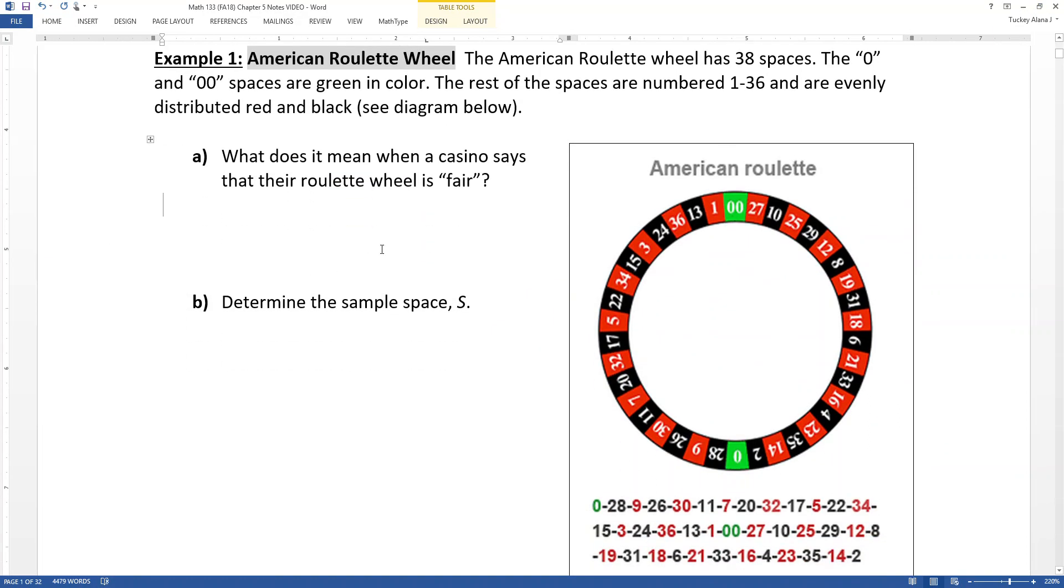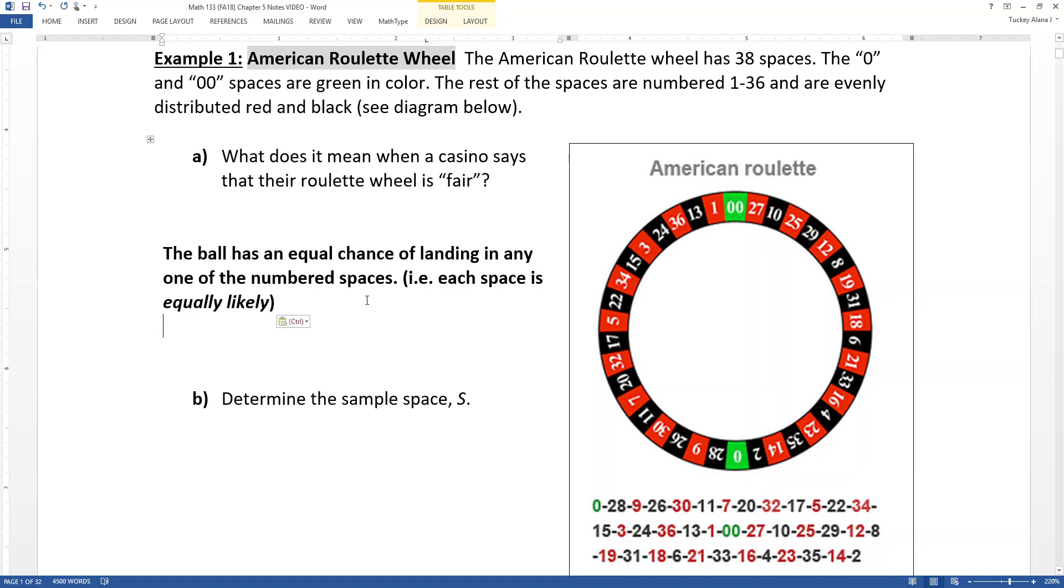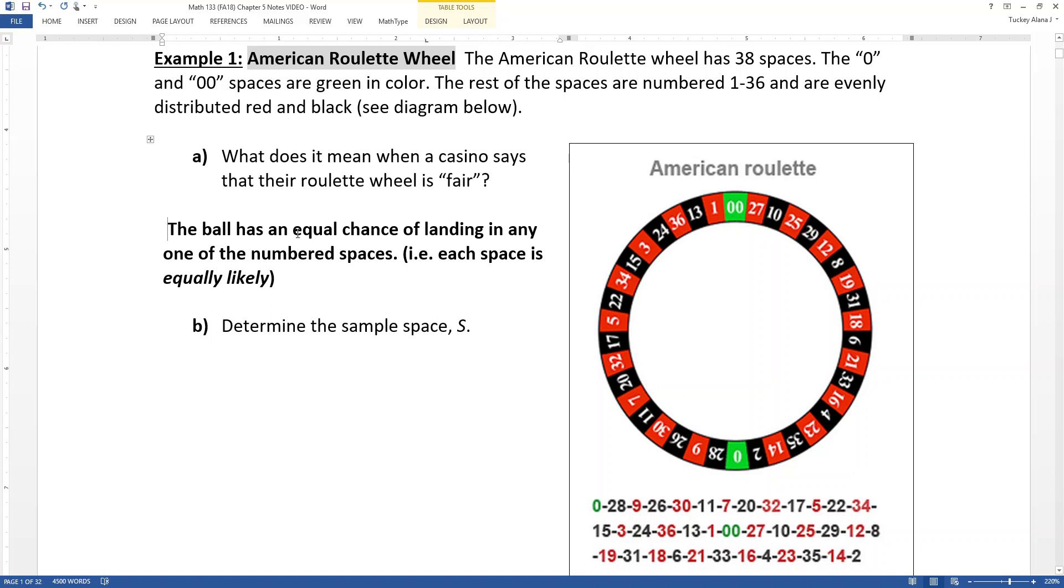So what does it mean when a casino says that their roulette wheel is fair? Well, to be fair means that each of those spaces is equally likely. Each of the numbers has just as likely a chance of occurring as any other. The way that this game is played is that it's a ball that's kind of bouncing around a spinning wheel. And each of the wheel numbers has little pockets. And eventually the ball will stop bouncing and it'll land in one of them. So the ball has an equal chance of landing in any one of the numbered spaces. I'm sure it shows up in a James Bond movie of some kind. It seems like the kind of game they would play in James Bond movies.